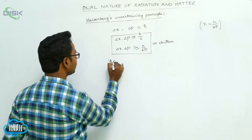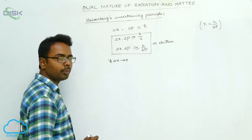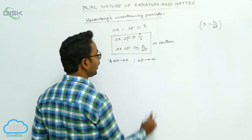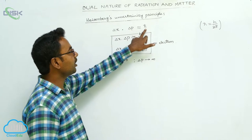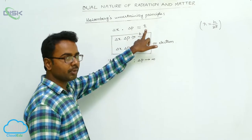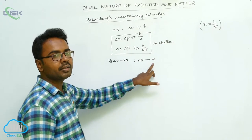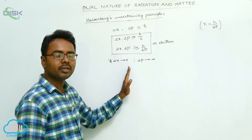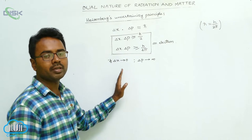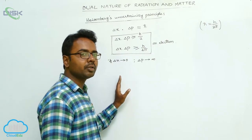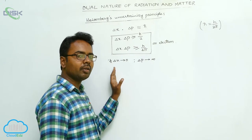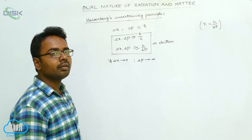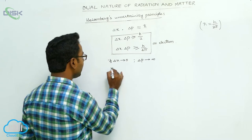For example, if delta x is approximately equal to 0, then delta p is approximately equal to infinity, since delta p equals h-cut by delta x — if delta x is 0, then delta p is infinity. This means while we are going to measure the position exactly — uncertainty in position is 0 — when we measure the position of any moving particle exactly, the uncertainty in the momentum becomes infinity.